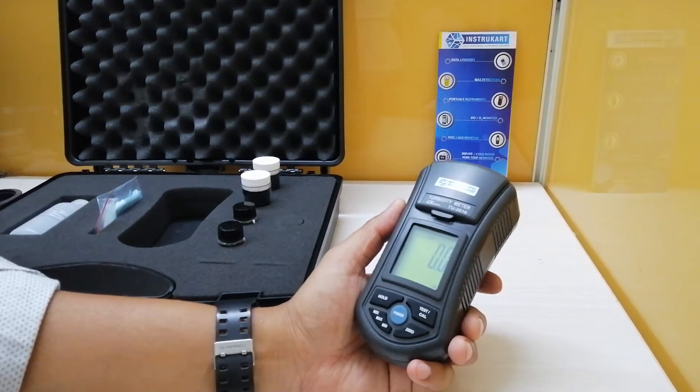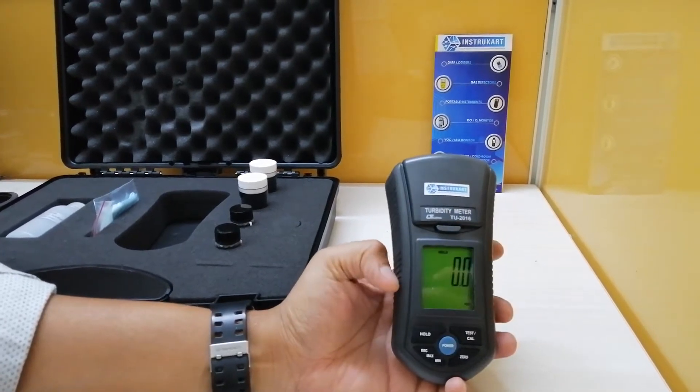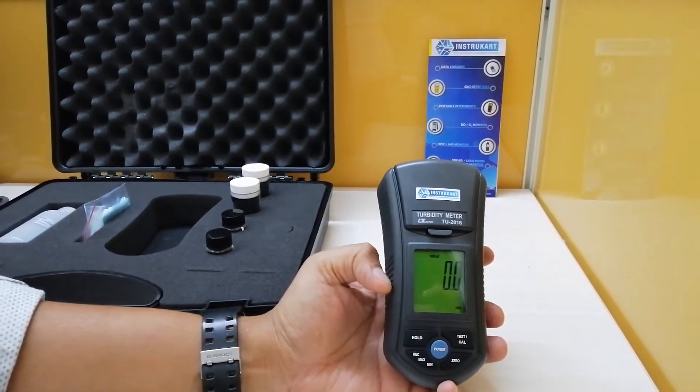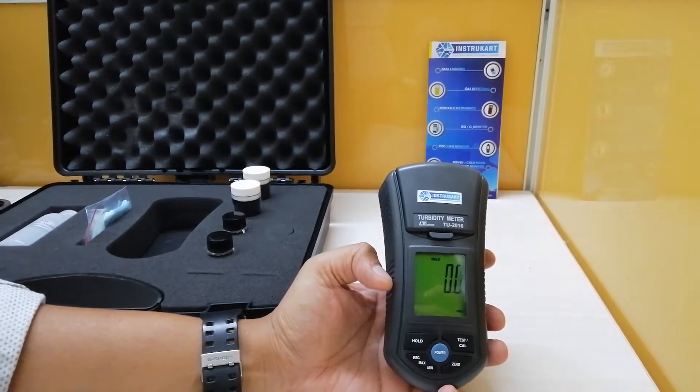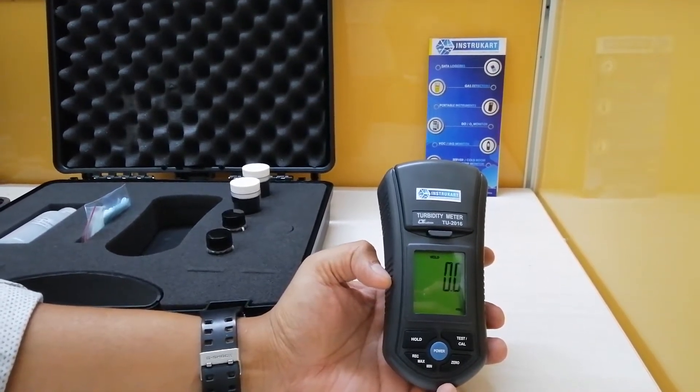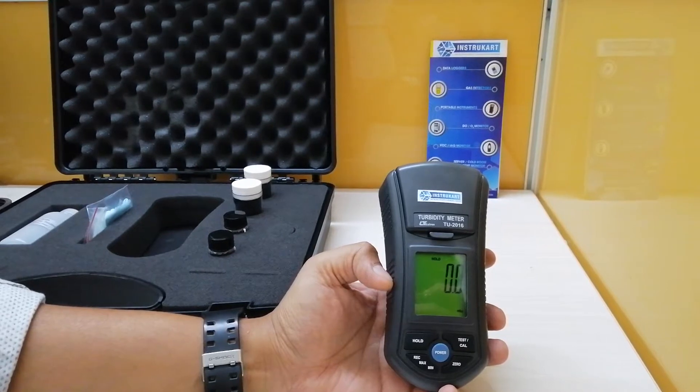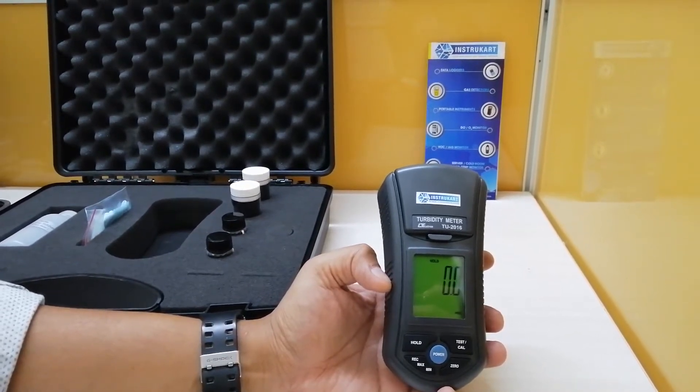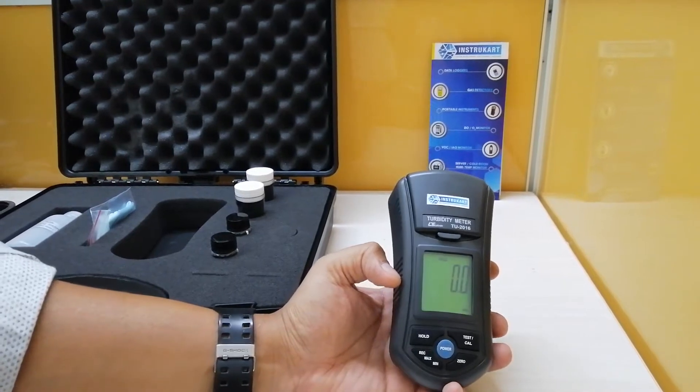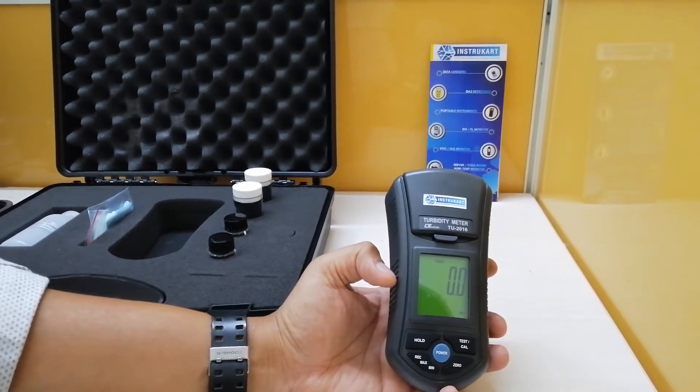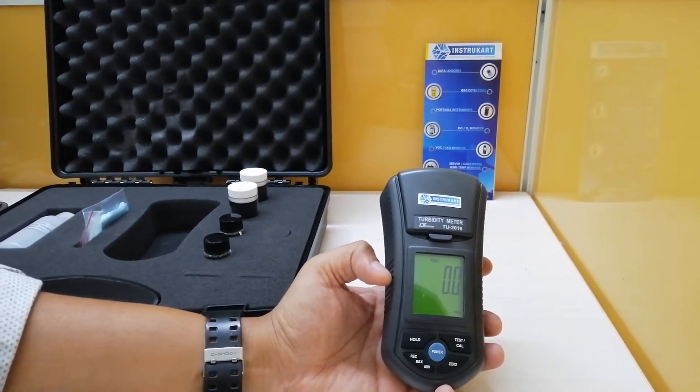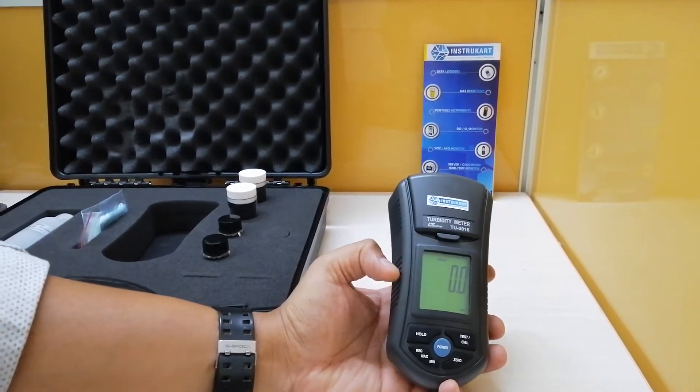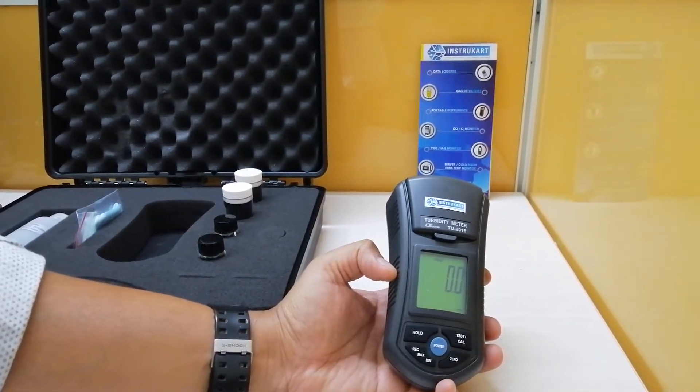This particular meter has a custom one-chip microprocessor LSI circuit and a range of 0.00 to 50.00 NTU as well as 50 to 1000 NTU. NTU stands for nephelometric turbidity unit.